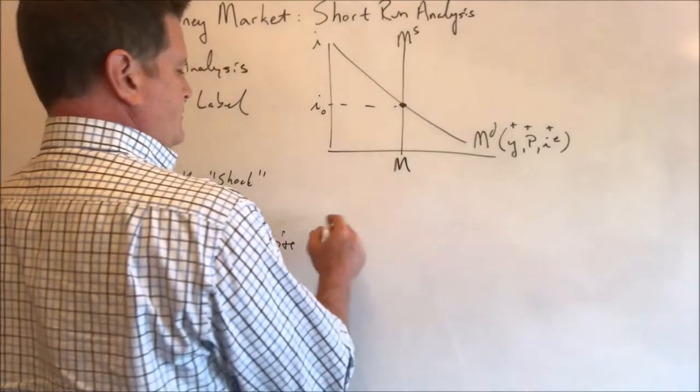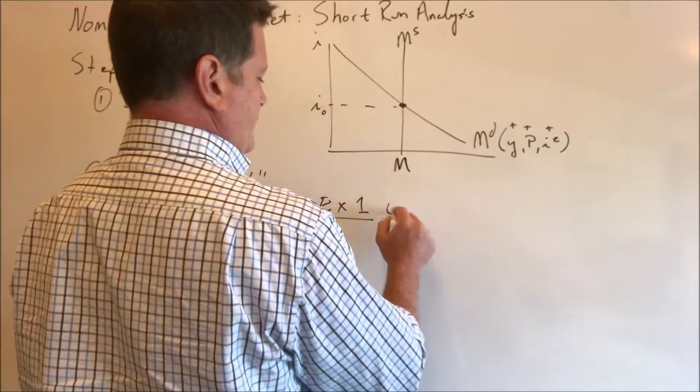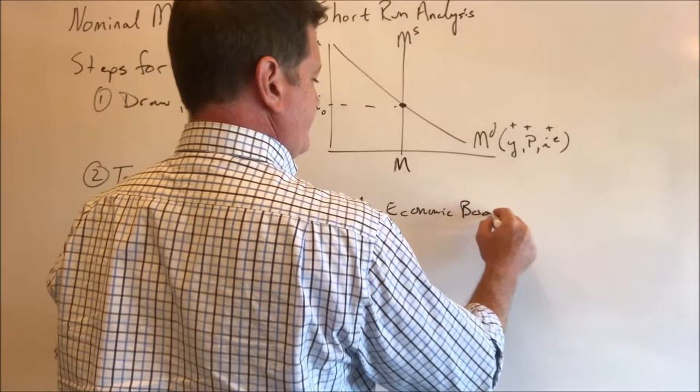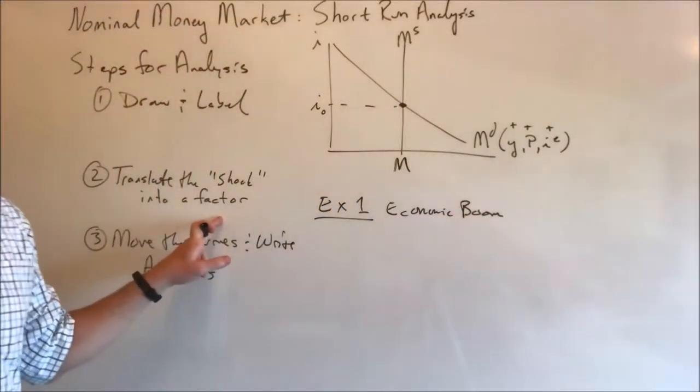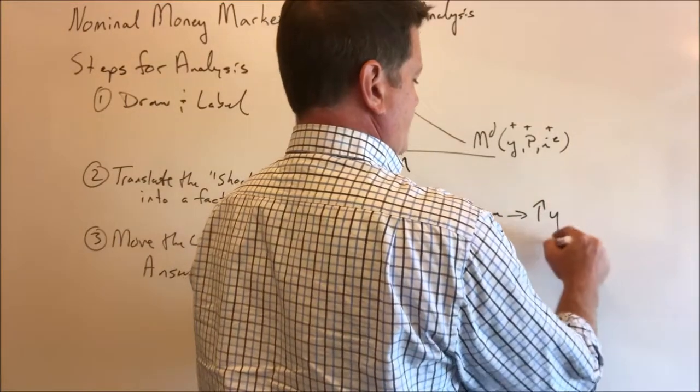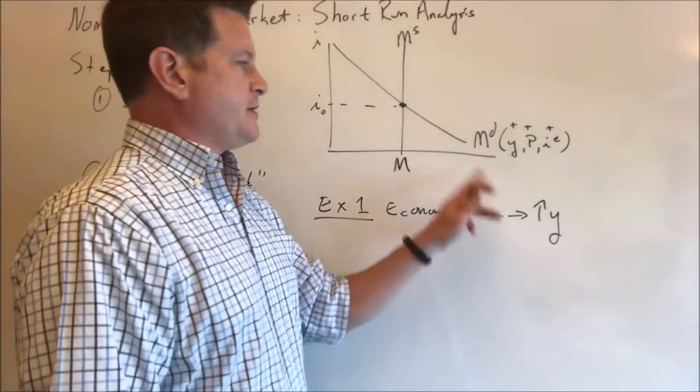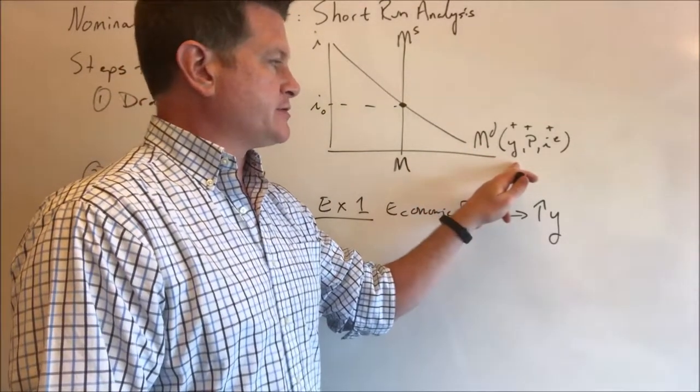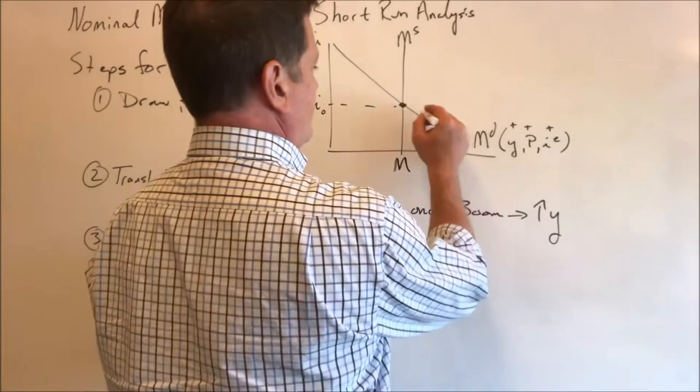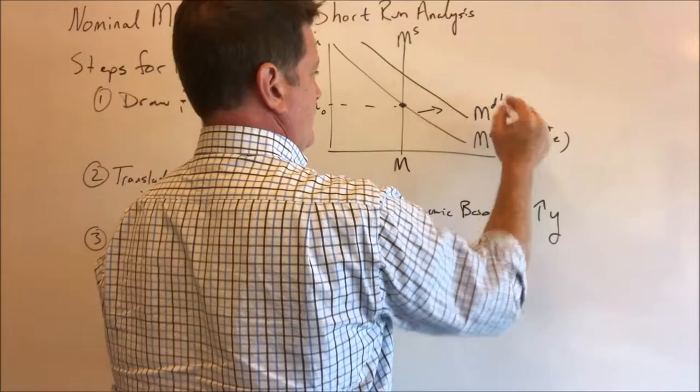Let's consider example one where we'll have an economic boom. Economic boom. How do we translate that into a factor? Well, economic boom is an increase in real GDP. Real GDP shows up on the money demand side. Higher real GDP increases money demand. And so we would see this.